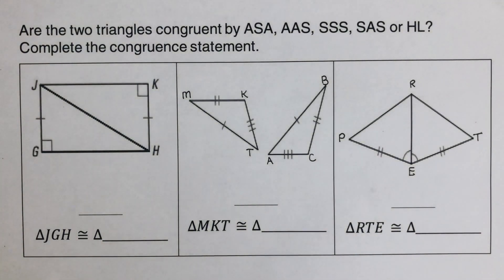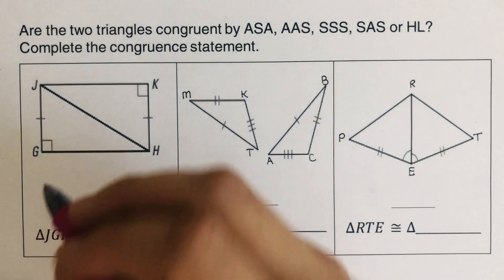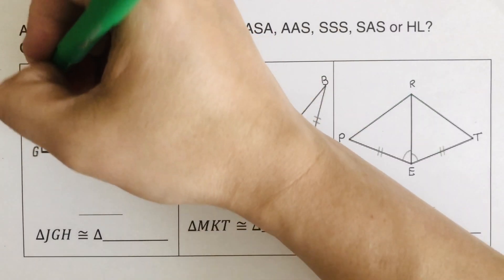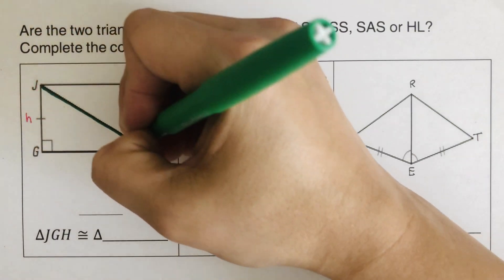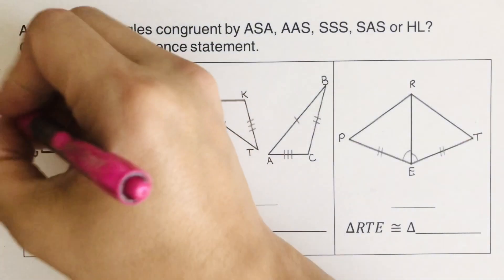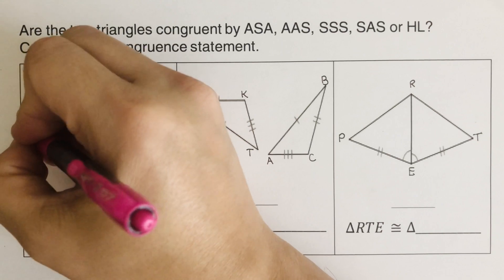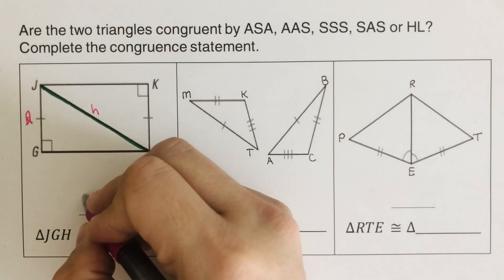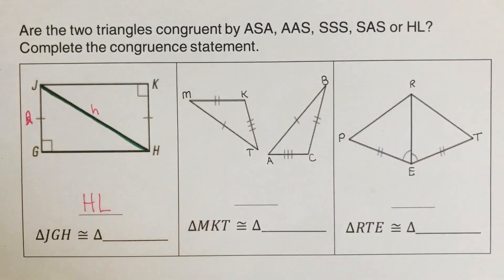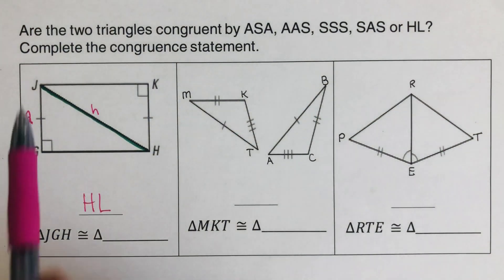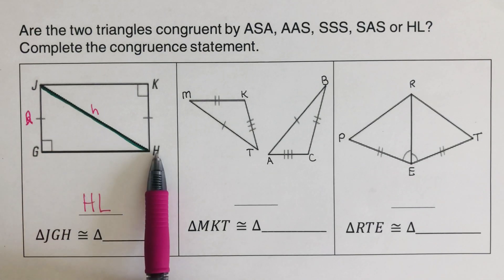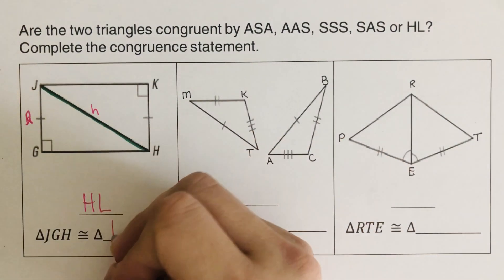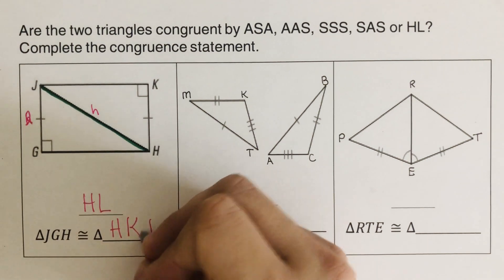Let's go over this. The first one is HL — this is the hypotenuse, and they are sharing the same side, which is the leg. So this is HL. The triangle is named JGH, and the congruent triangle is HKJ. So triangle JGH is congruent to triangle HKJ.